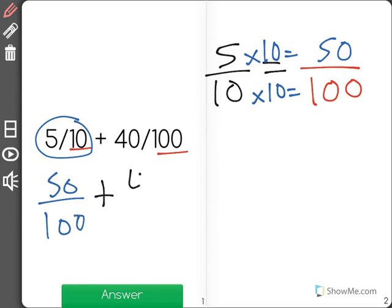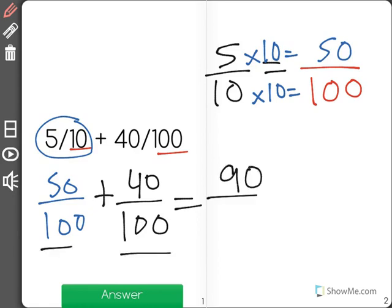Now I have 50 out of 100 plus 40 over 100, and since they have the same denominator now I could add. That will be equal to 90.